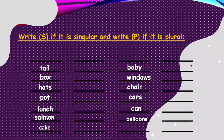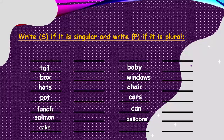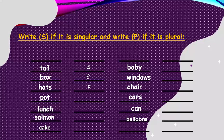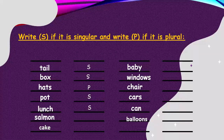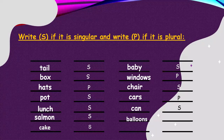Let's exercise now. Write S if it is a singular noun and write P if it's a plural noun. If you have a plural noun, you have to see in this word S, ES, or IES. If you don't find S, ES, or IES, it will be singular. Tail — singular. Box — singular. Hats — plural. Pot — singular. Launch — singular. Sound — singular. Cake — singular. Baby — singular. Windows — I found S, so it's plural. Chair — singular. Cars — many cars, plural. Can — singular. Balloons — many balloons, plural.